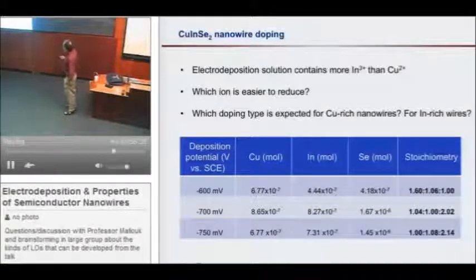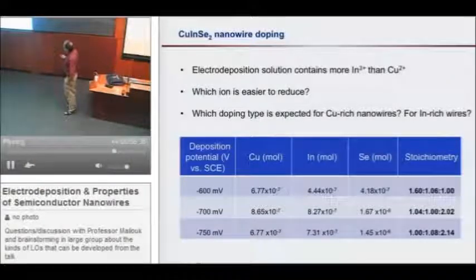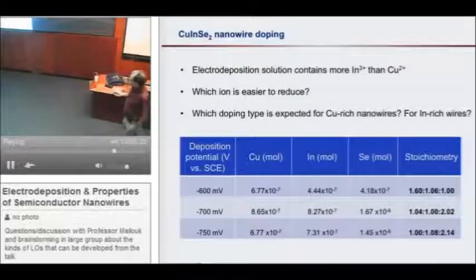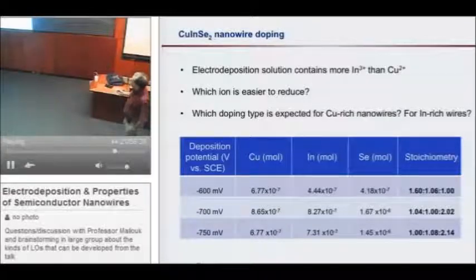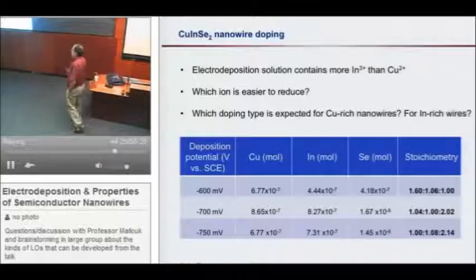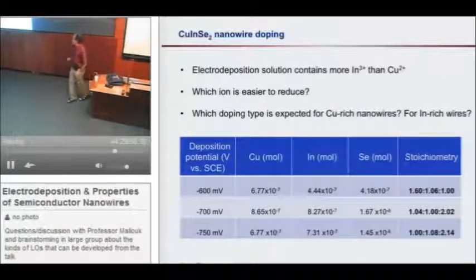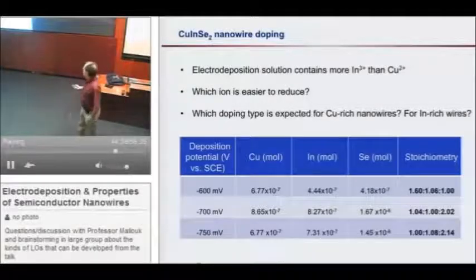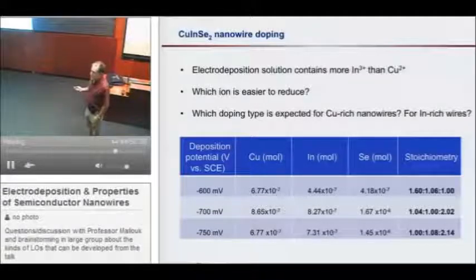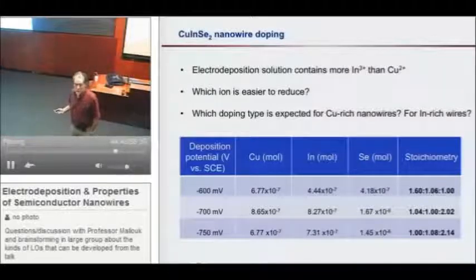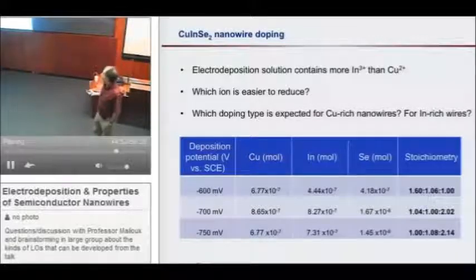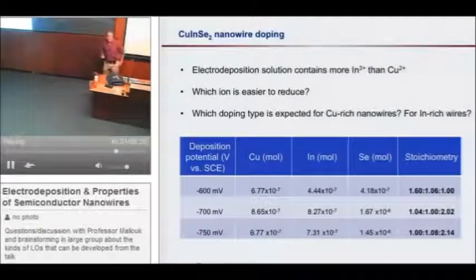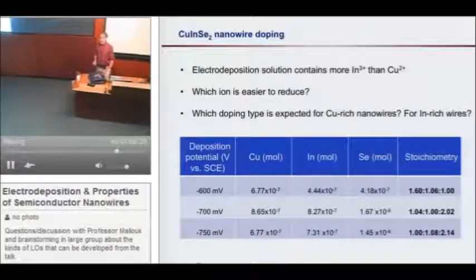Now the question is, can we control the doping in these materials? The solution contains, on purpose, more indium than copper. Which ion is easier to reduce, copper or indium? Copper, right. Copper's one of the least active metals. So we have more indium than copper. As we change the potential, at low overpotential we're going to get something copper-rich. At higher overpotential we're going to get more indium. This allows us to tune the balance of these. We can make the wires copper-rich or indium-rich. Depending on the stoichiometry and the potential: if the potential is too low, we get a lot of copper.